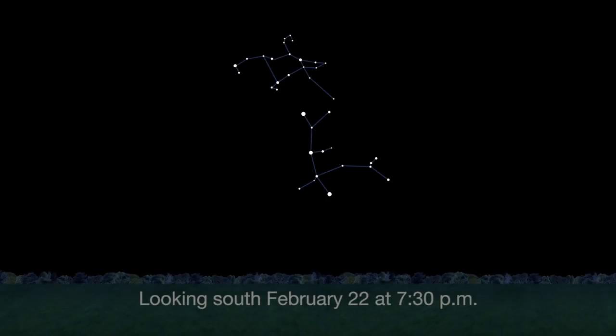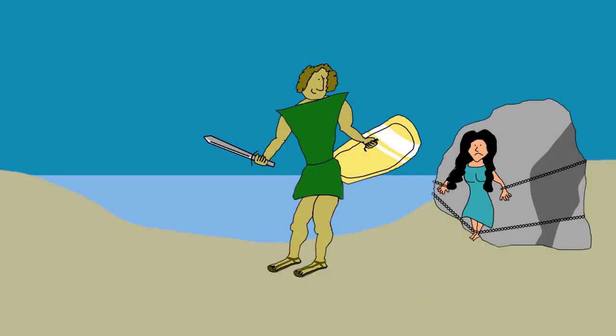The constellations Perseus and Andromeda are easy to see high overhead this month. According to lore, the warrior Perseus spotted a beautiful woman, Andromeda, chained to a seaside rock.